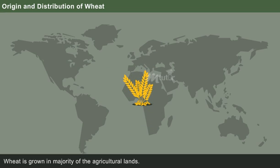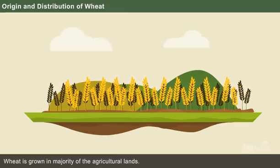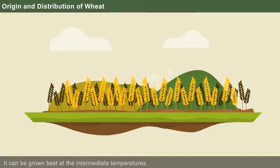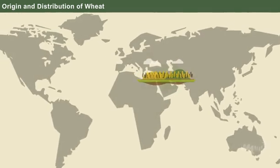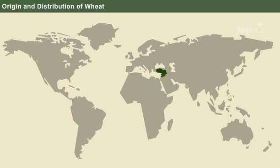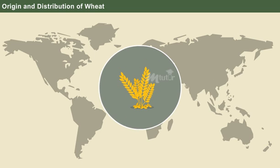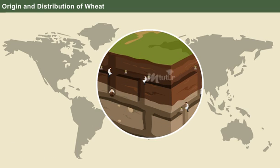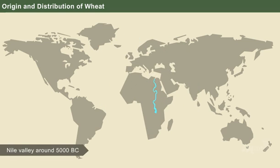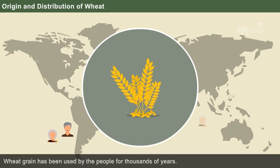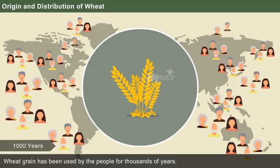Wheat is grown on more agricultural land than any other field crop worldwide. It is well adapted to different kinds of environments, but it grows best at intermediate temperatures. It is believed that wheat originated in southwestern Asia. Some of the earliest remains of the crop have been found in Syria and Turkey. Primitive relatives of present-day wheat have been discovered in some of the oldest excavations in eastern Iraq, dating back 9,000 years. Archaeological findings also show that bread wheat was grown in the Nile Valley around 5000 BC, as well as in India and China. Therefore, wheat grain has been used as a vital component of the daily diet for thousands of years.